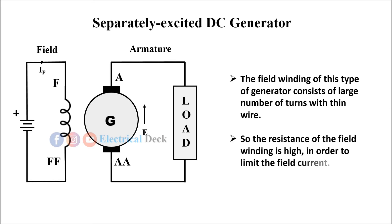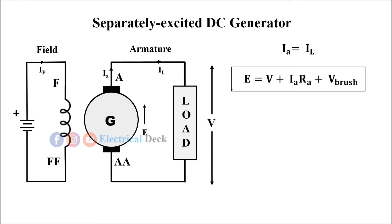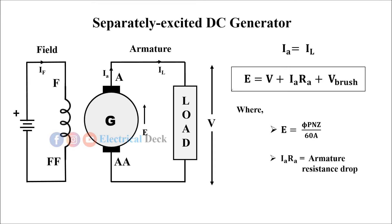In order to limit the field current, from the circuit diagram, we can see that armature current I_A is equal to load current I_L. Therefore, the terminal voltage V generated at the load is given by E = V + I_A·R_A + V_brush, where E is the induced EMF, that is (π·P·N·Z) / (60·A), I_A·R_A is the armature winding drop due to armature resistance, and V_brush is the brush contact drop at the commutator. Generally, brush contact drop is negligible compared to other voltages, hence it can be neglected.